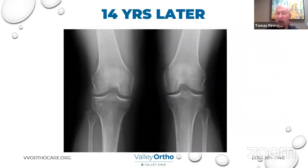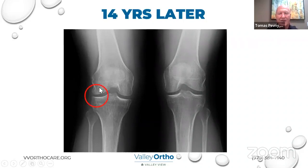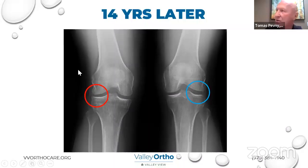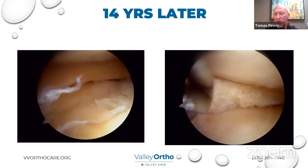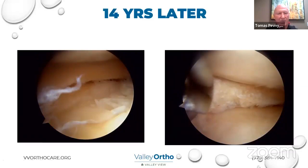Interestingly, she came back 14 years later. On x-ray comparing both knees, you can see the distance between the femur and tibia on the injured side is narrower compared to the left — she had started to develop some arthritis. She had also developed a new meniscus tear. We went back in, and you can see the cartilage is a little beat up but overall looks pretty good. We cleaned up the meniscus tear, and as far as I know, she's done well since. Anytime you have an injury to the smooth cartilage that's disrupted — even if reconstituted — it's still at increased risk of developing some arthritis.